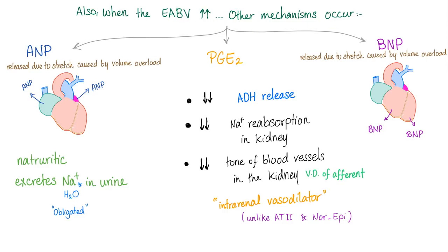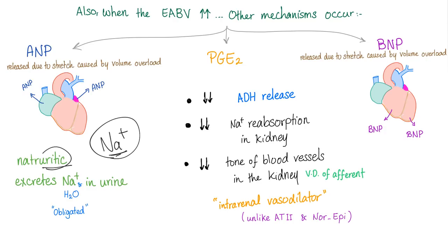When effective arterial blood volume is high, other mechanisms happen: atrial natriuretic peptide, brain natriuretic peptide, and prostaglandin-A2. ANP is released due to stretch of the atrium caused by volume overload. When both atria are stretched, they secrete ANP — atrial because it's secreted from the atrium, natriuretic because natrium is sodium and diuretic means excretion in urine. This ANP is going to excrete sodium in urine — the name has the answer — and water will follow sodium. That water is obligated water.